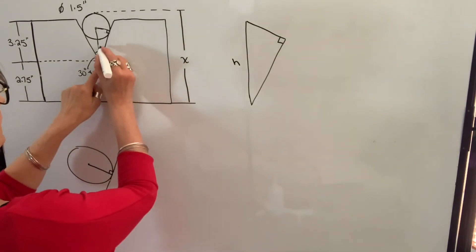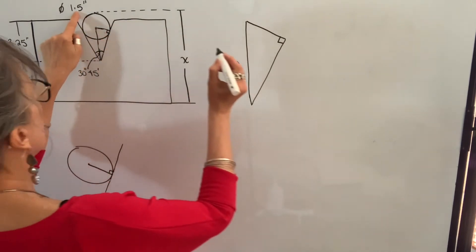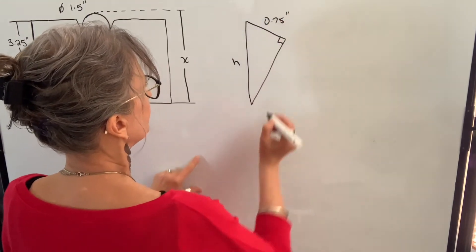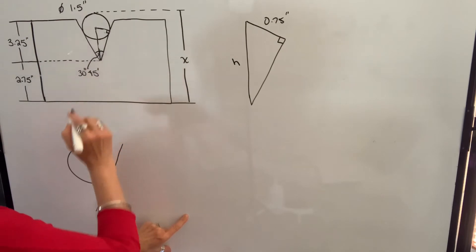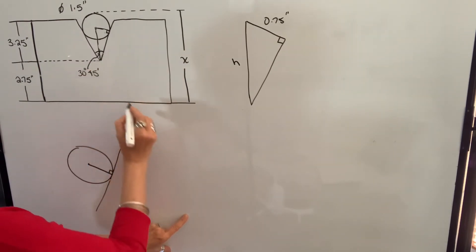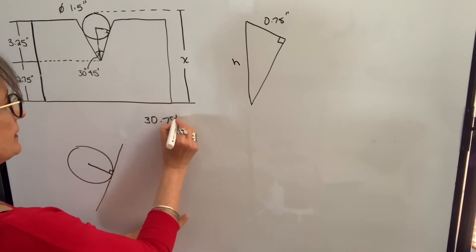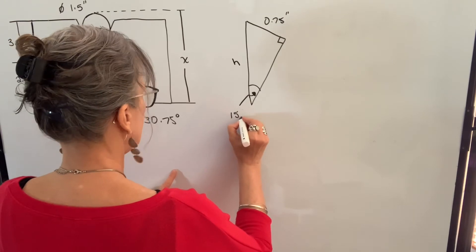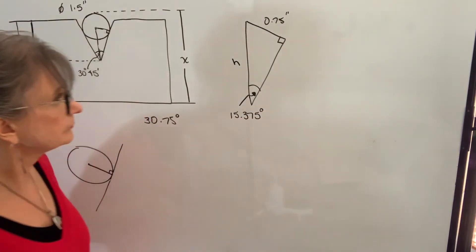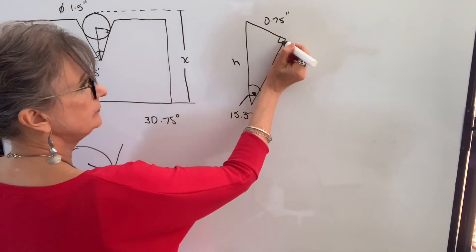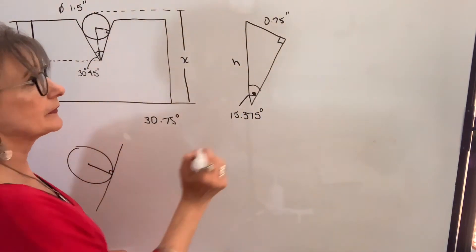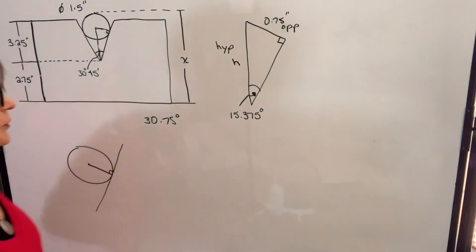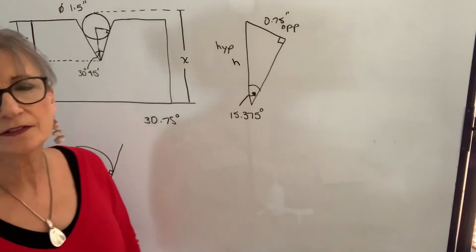So let's first of all find H. This length I know is going to be half of the diameter of the pin, so that's going to be 0.75 inches. I know the total included angle is 30 degrees 45 minutes, which is 30.75 degrees. I'm going to take half of that to get this angle here, so it's 15.375 degrees. This is a right angle, so this is the hypotenuse. This is the side opposite. The trig function that uses the opposite and hypotenuse sides is the sine function.